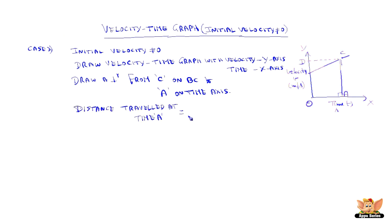Now we know that the distance travelled at time A, which means by the time the body reaches the point A on the time axis, is defined as area enclosed by line BC with time OA.